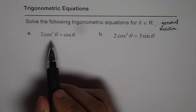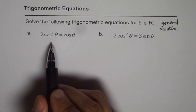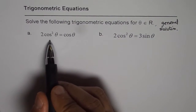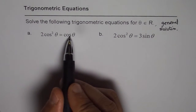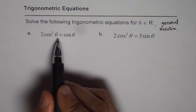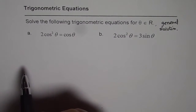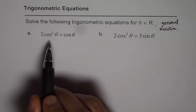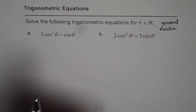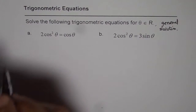For equation one, don't make the mistake of cancelling out one of the cos thetas or dividing by cos theta. In that case you get 2 cos theta equals 1 and you will lose some solutions. We will soon realize why that is a mistake. The correct strategy is to bring everything to one side.